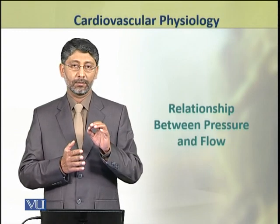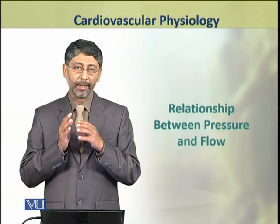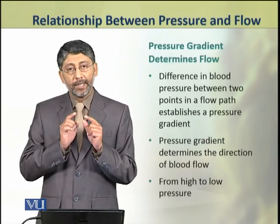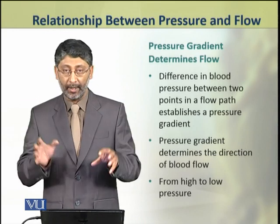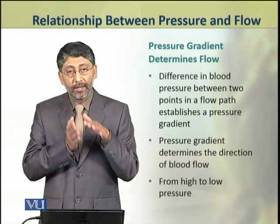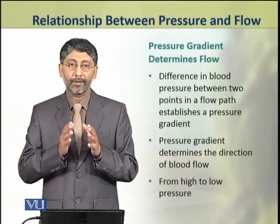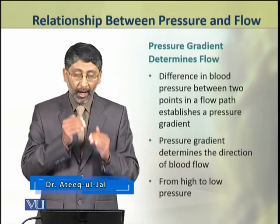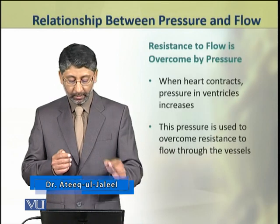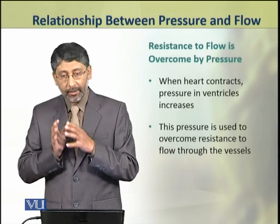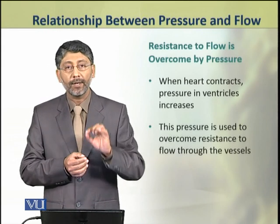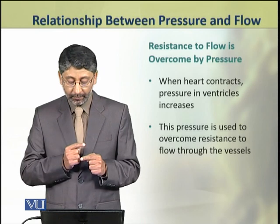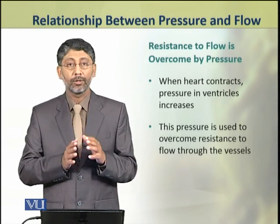Dear students, in this topic we shall discuss the relationship between the pressure and flow of blood. The difference in blood pressure between two points in a flow path gives rise to a pressure gradient. This pressure gradient determines the direction of flow from higher to lower pressure. When the heart contracts, pressure in the ventricles increases, and this pressure is used to overcome the resistance to flow through the blood vessels.